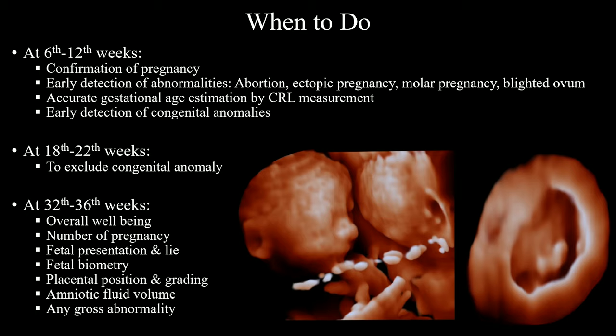We want our pregnant patients to visit our ultrasound department at least three times during pregnancy. Our first scan should be within 6 to 12 weeks. We want to confirm the pregnancy. We want to exclude early pregnancy-related abnormalities like abortion, ectopic pregnancy, molar pregnancy, and blighted ovum. Sometimes we see patients not willing to come at this age. They think there is nothing to see as the embryo is very tiny. But you need to know whether there is an intrauterine or extrauterine gestation.